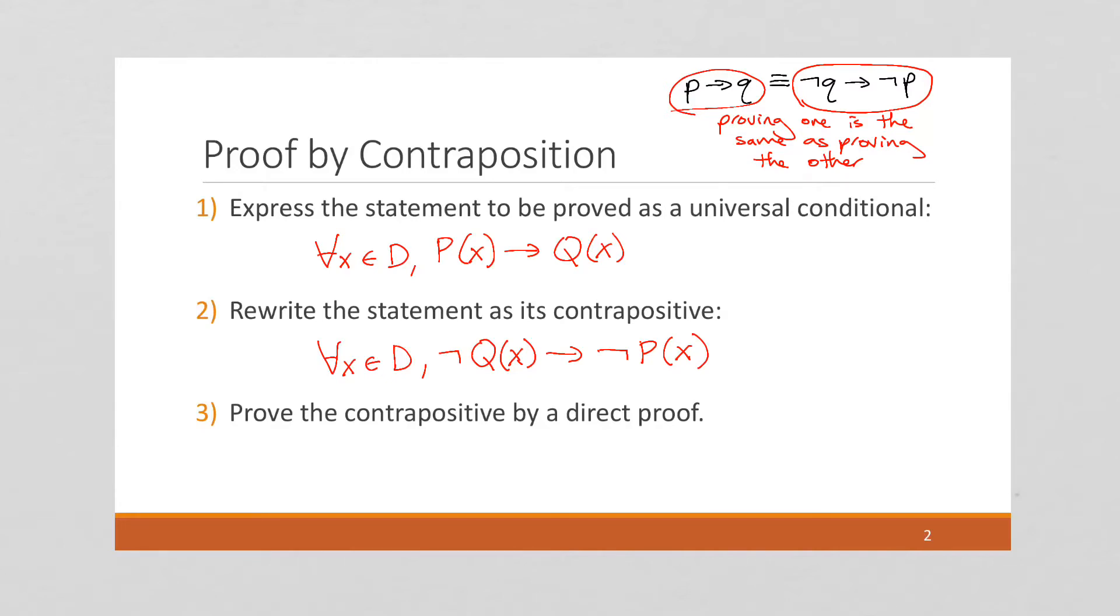And then finally, the third step is to just prove the contrapositive by a direct proof, which we all know how to do at this point. So we're going to start by supposing this and we're going to try to deduce the second part.